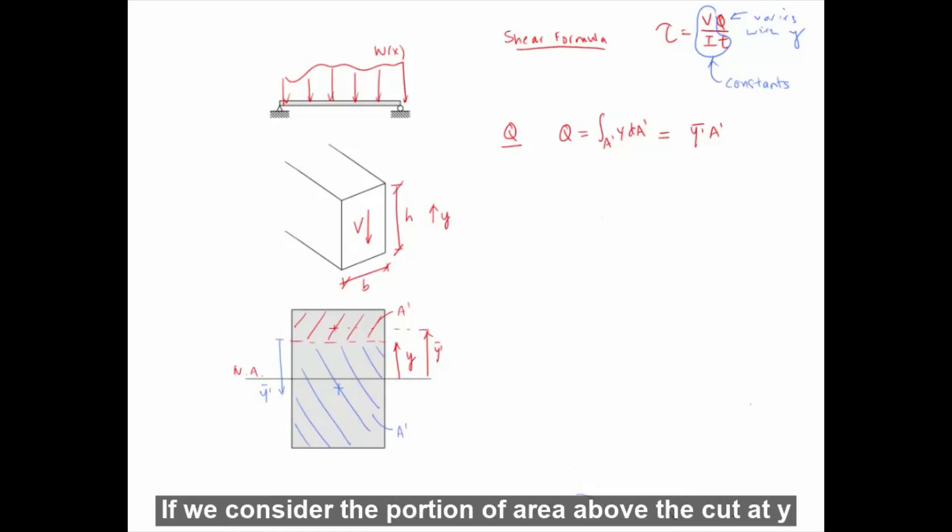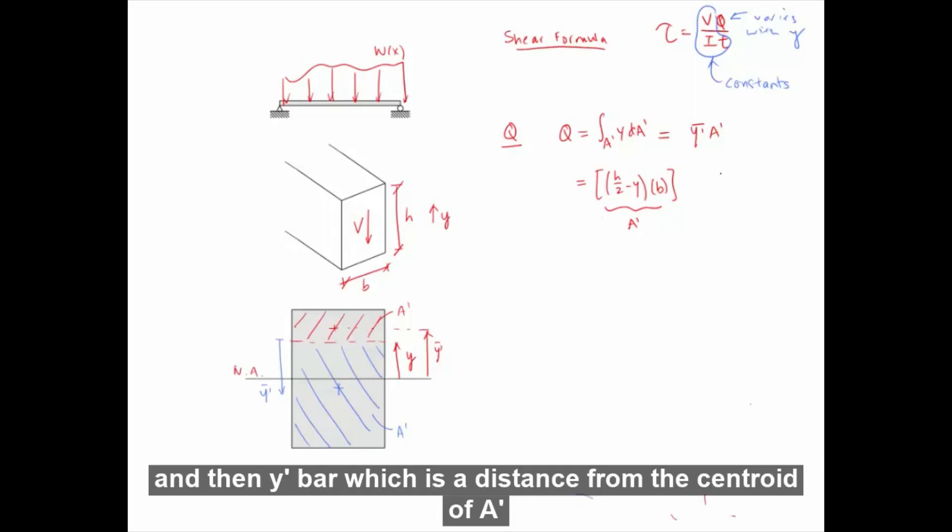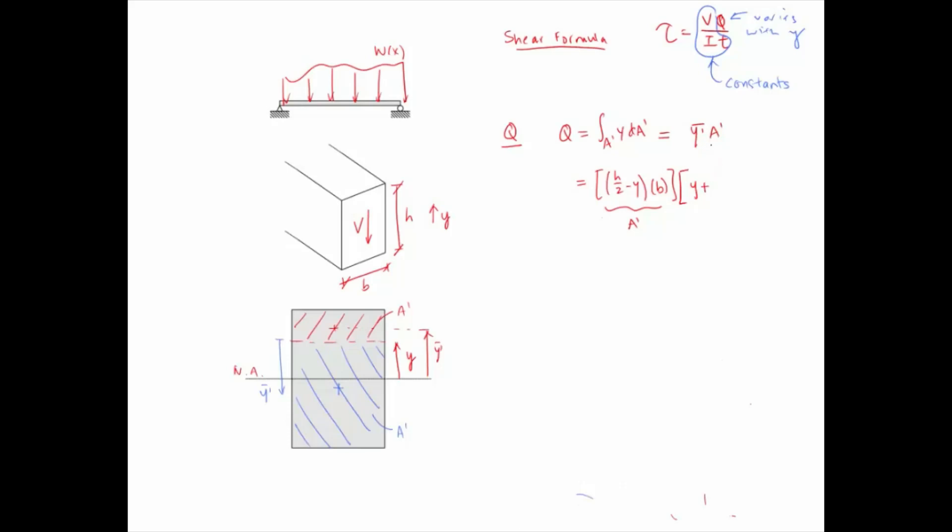So let's go back and calculate Q. If we consider the portion of area above the cut at Y, so this portion in red, the height of A prime is H over 2 minus Y, and the width is the width of the base, B. Multiply together, this is the area A prime. And then Y prime bar, which is the distance from the centroid of A prime to the neutral axis, is simply Y plus half the sectioned height, which is H over 2 minus Y. So this term is Y prime bar. We can simplify this to...